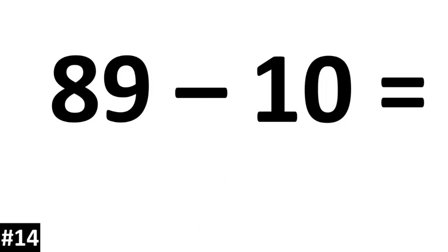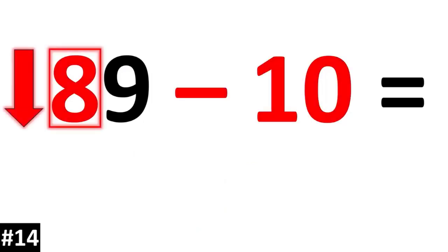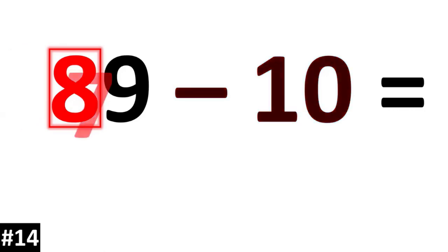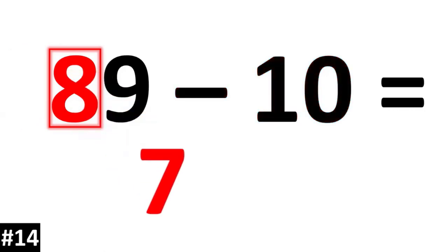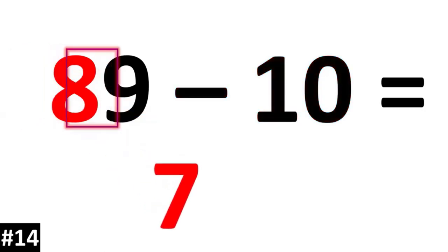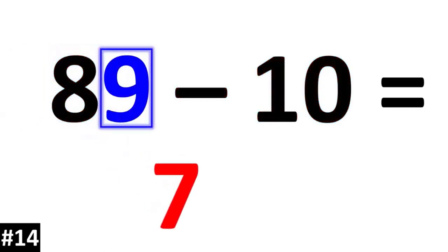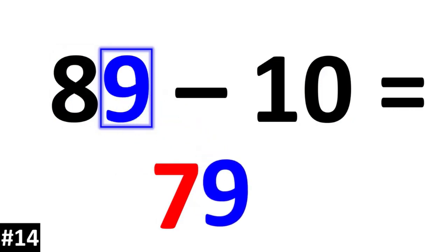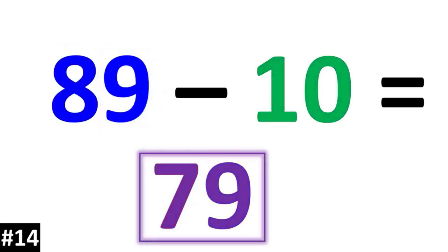89 minus 10. The 8 is going to go down to 7. The ones value stays the same, and 89 minus 10 is 79.